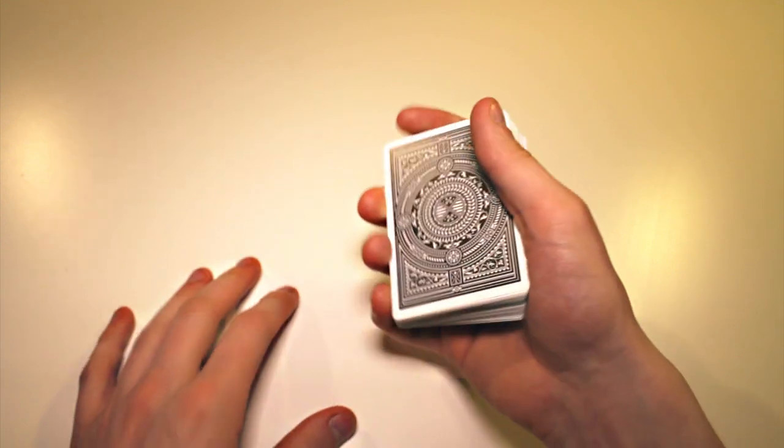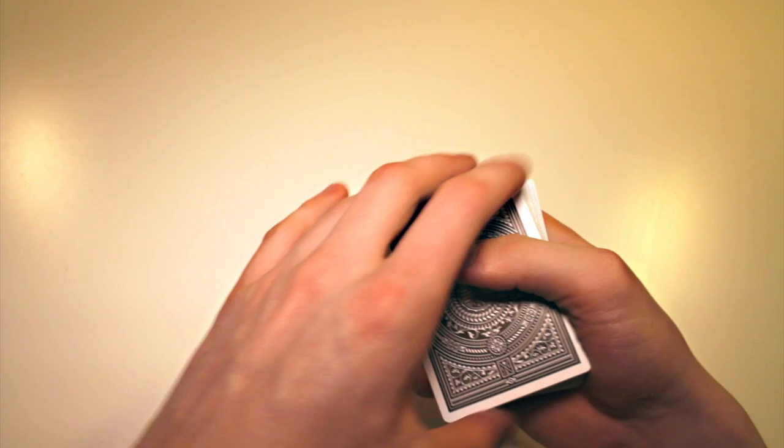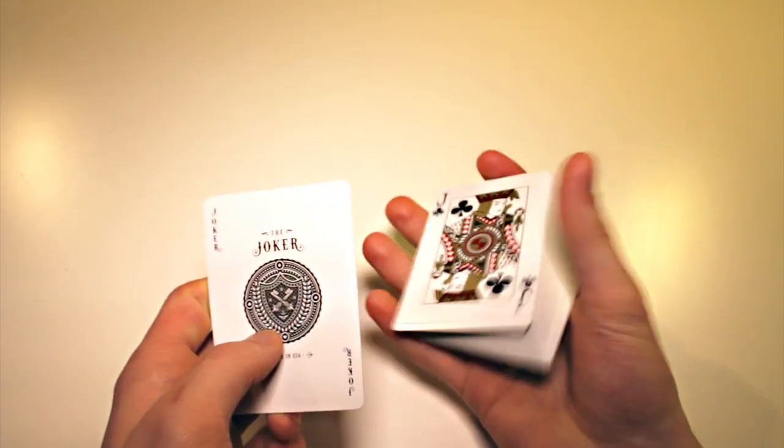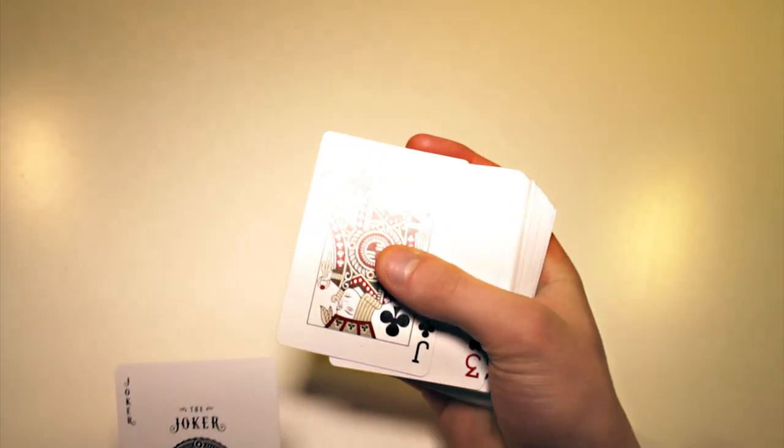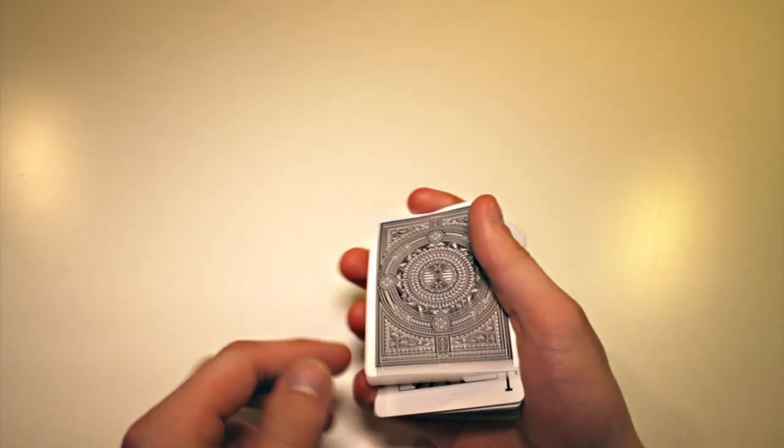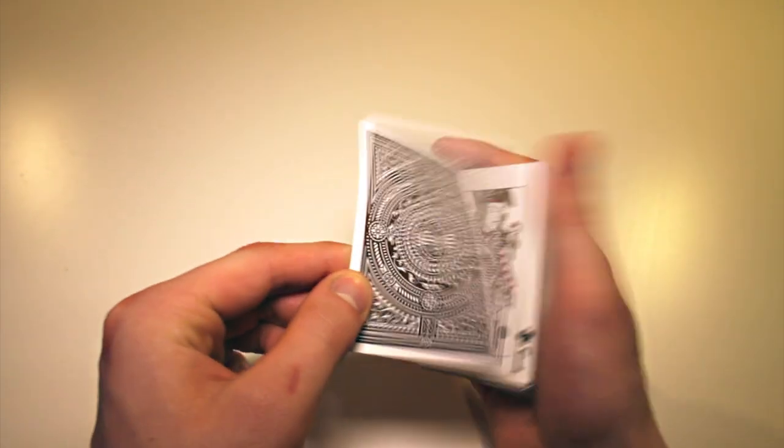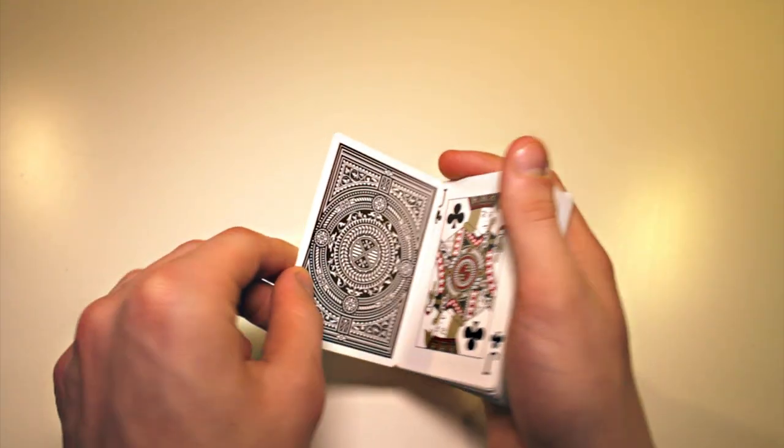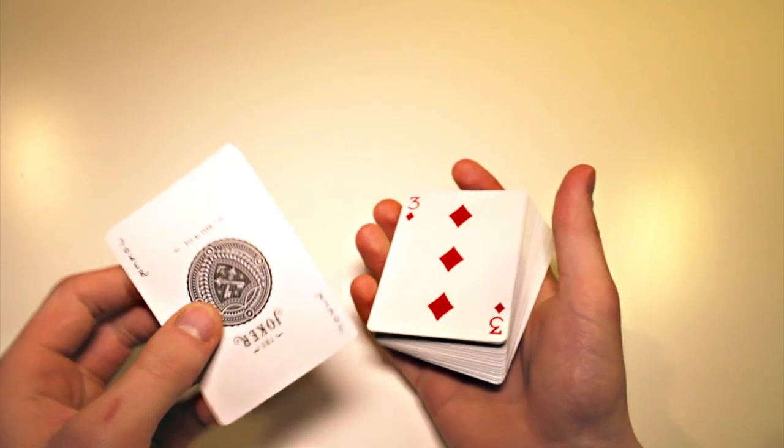Now, the Paintbrush change can also be used like this, let me show you how. It can also be used like this. Now look, we have the Jack of Clubs on top, we are going to try to change the Jack of Clubs, now look. Just like that, Three of Diamonds.